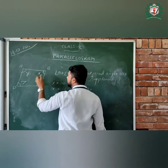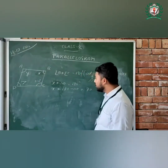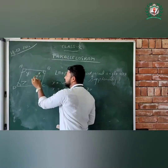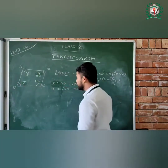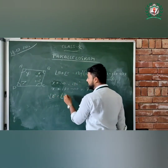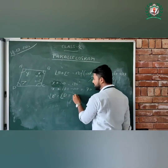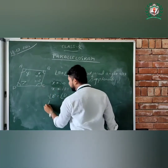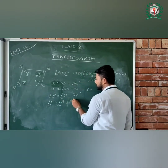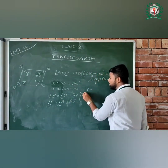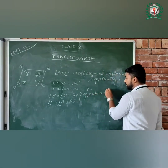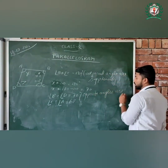Now, since X equals 70, angle D is also 70 degrees. So angle B equals angle D equals 70 degrees, and angle C equals angle A equals 110 degrees, because opposite angles of a parallelogram are congruent.